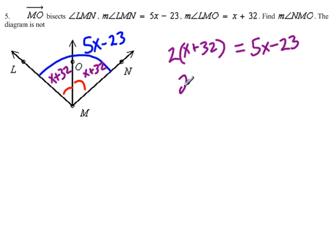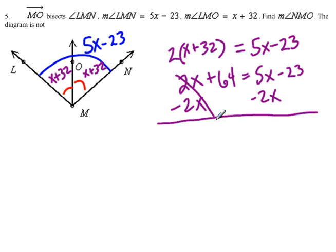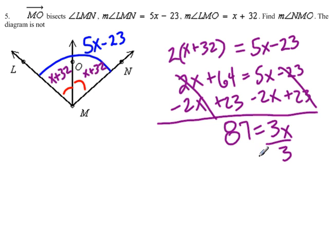Solving, we have 2x plus 64 equals 5x minus 23. Once again, I'm going to do two steps in one. I'm going to subtract 2x from both sides, and I will add 23 to both sides. So 64 plus 23 gives us 87, and 3x here. Solving, divide both sides by 3, so x will equal 29.